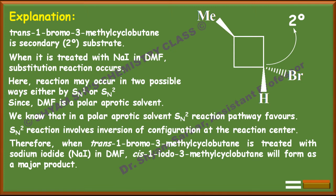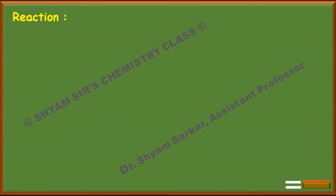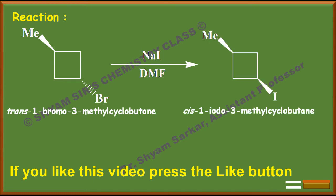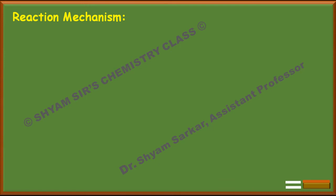Therefore, we can conclude that when trans-1-bromo-3-methylcyclobutane is treated with sodium iodide in DMF solution, cis-1-iodo-3-methylcyclobutane will form as the major product. Let us now see the reaction mechanism.